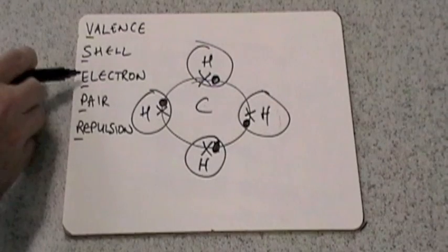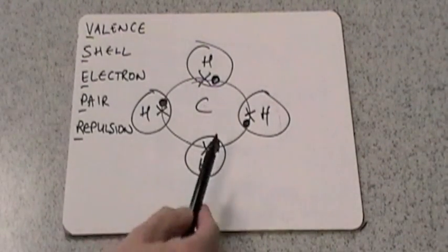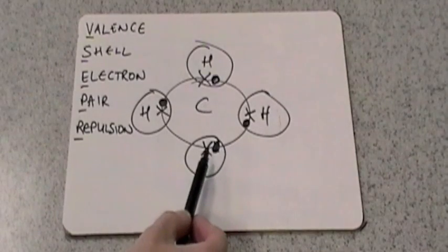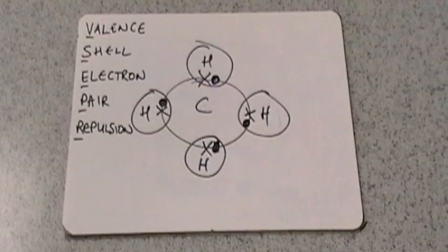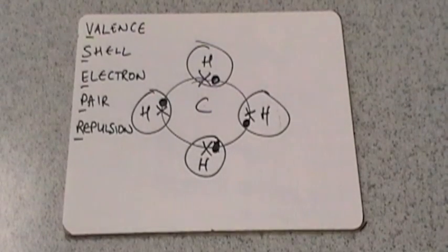We're interested in how many electron pairs are in the valence shell. You can see from the diagram we've got one, two, three, four pairs of electrons in the valence shell. Because these electron pairs are all negatively charged, these electron pairs will repel each other. They will adopt a certain shape with a certain bond angle, and that's what we're going to work out with the video.